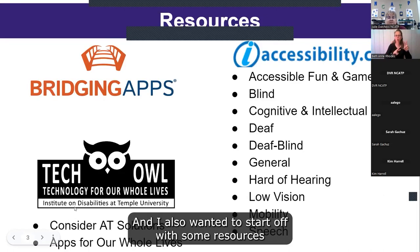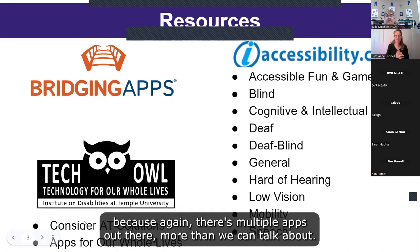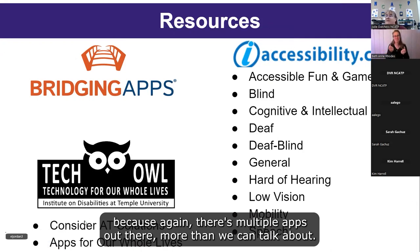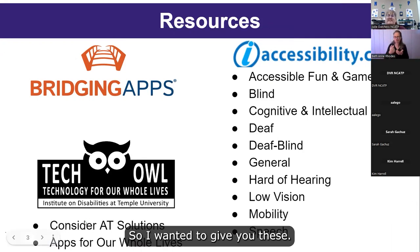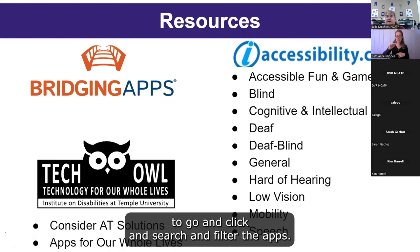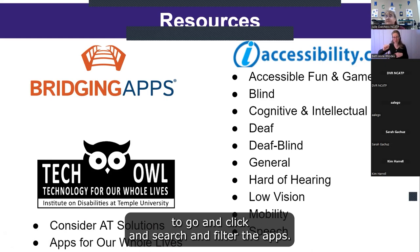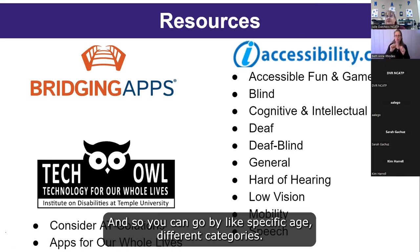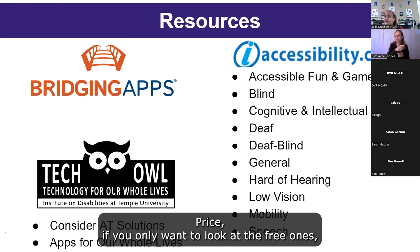I wanted to start off with some resources, because there are multiple apps out there — more than we can talk about. Bridging Apps is a really good resource where you can go, click, search, and filter apps by specific age, different categories, and price — including free-only options.